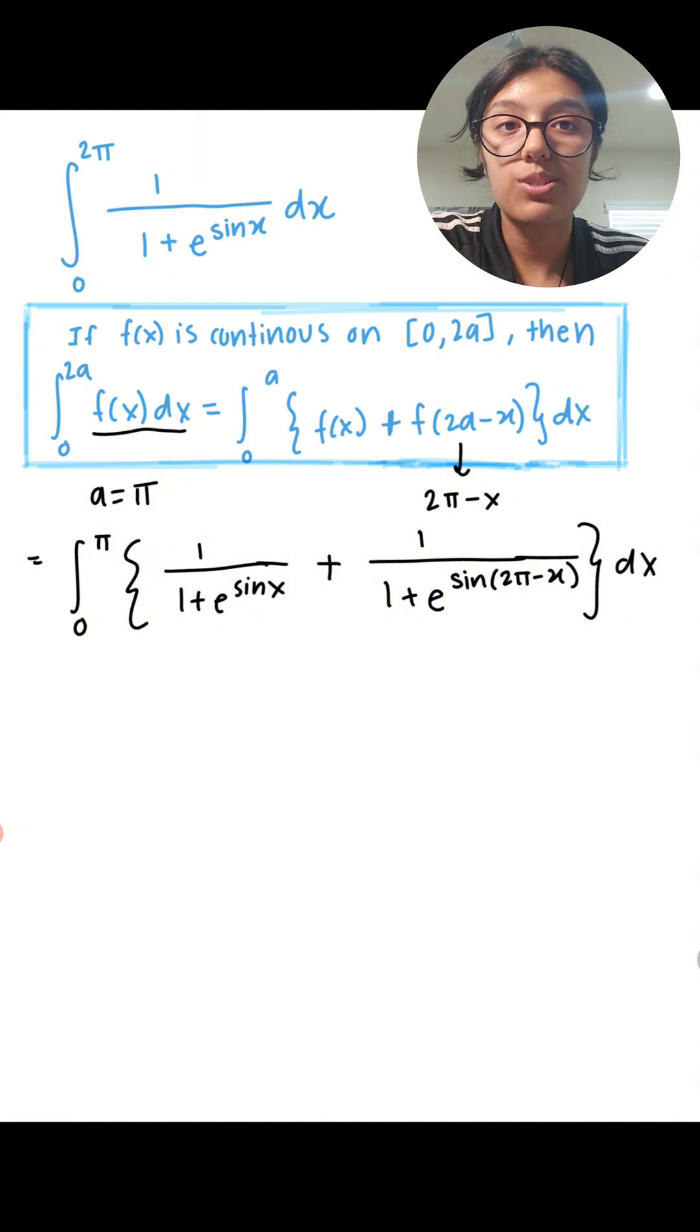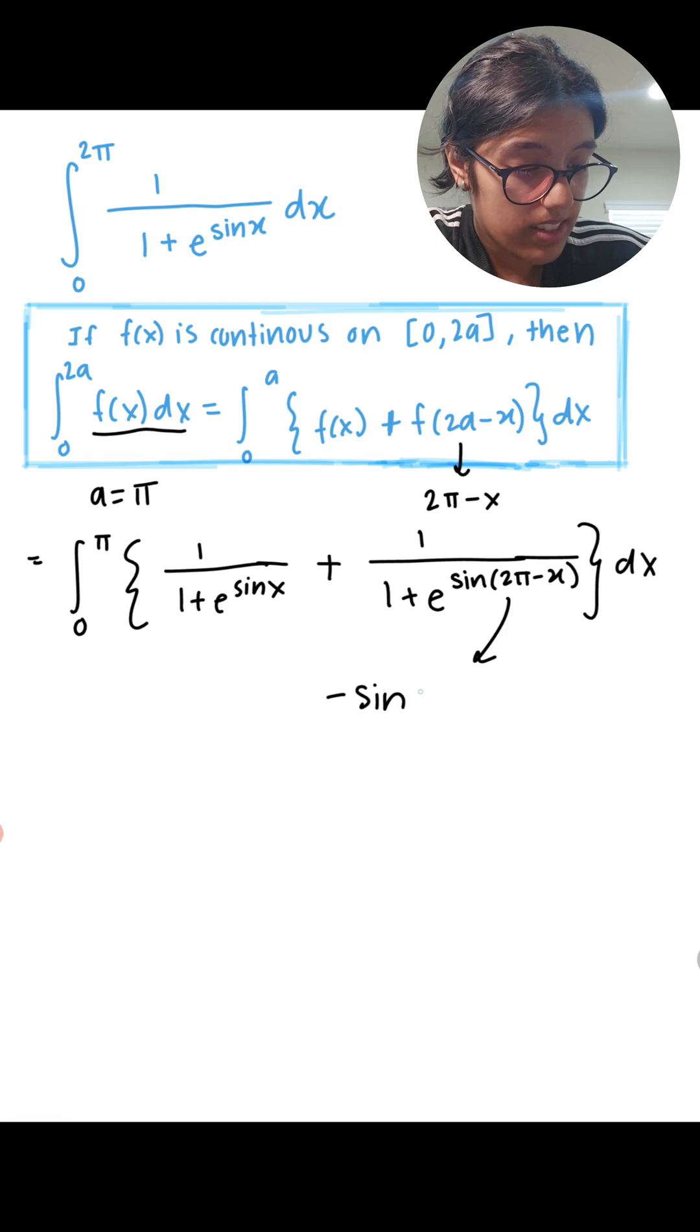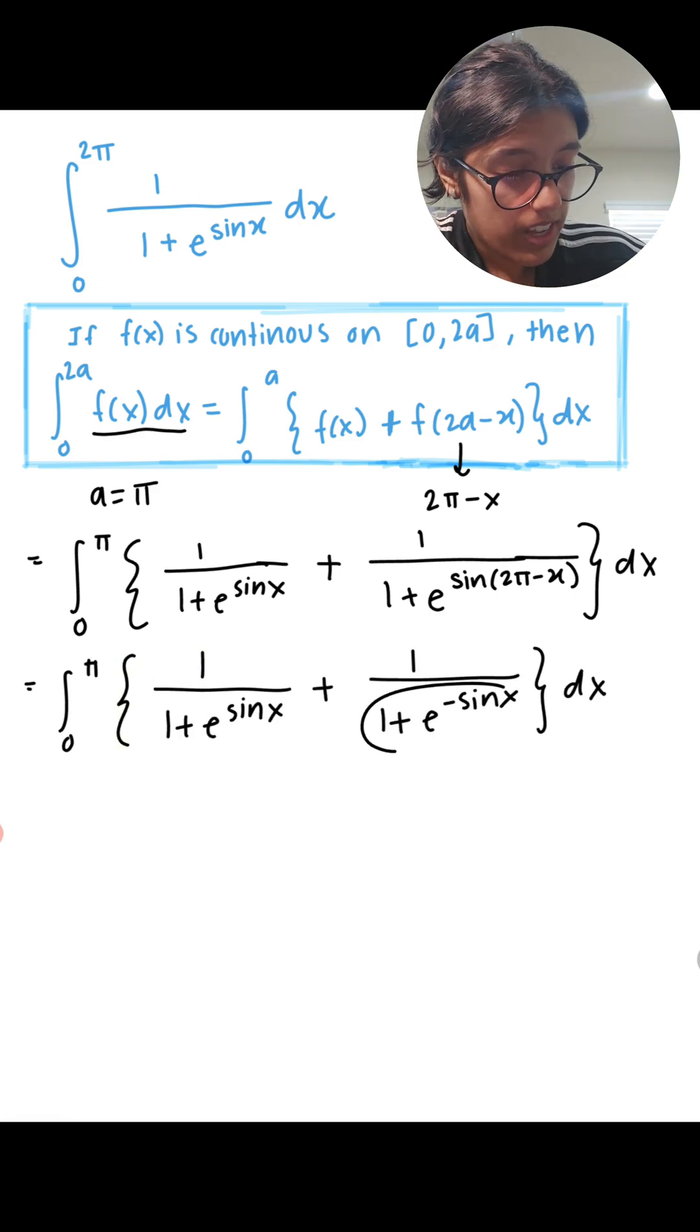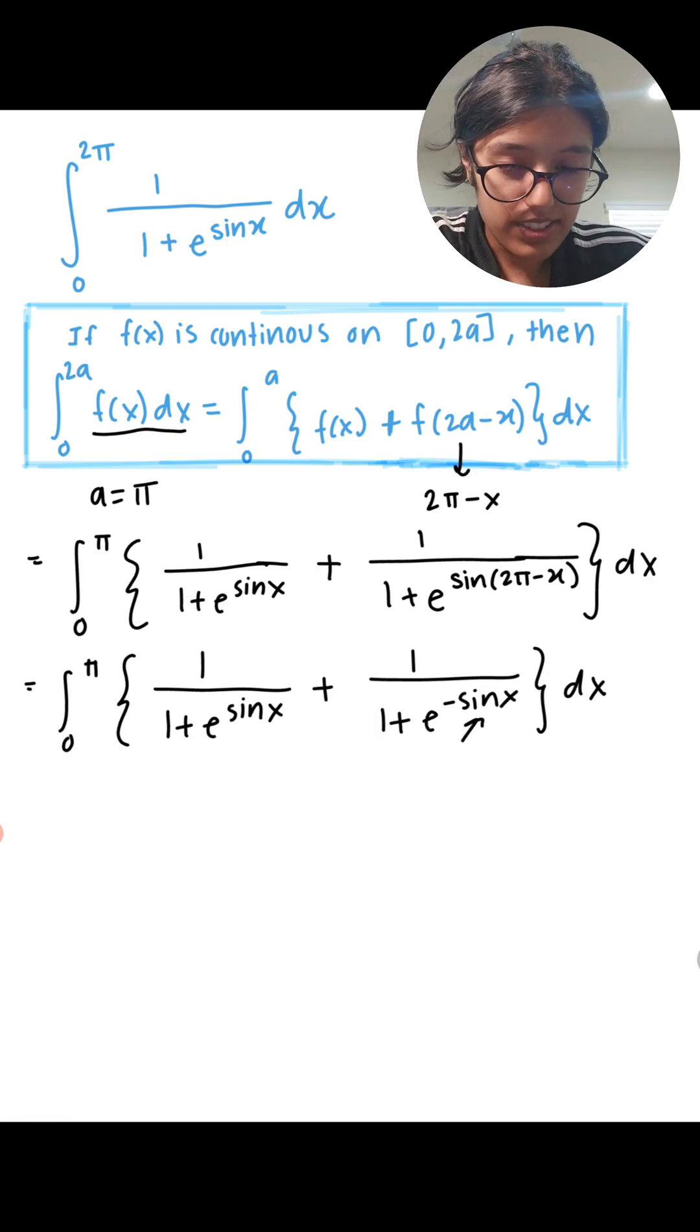And according to our trigonometric identities, I know that sine of 2π minus x is equal to minus sine x. So I'm going to rewrite this integral in terms of minus sine x. All right, and I'm going to simplify this a bit more. I'm going to get rid of that negative and that negative sine x.